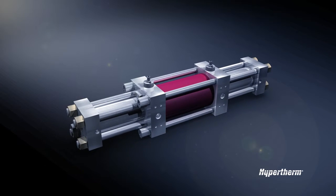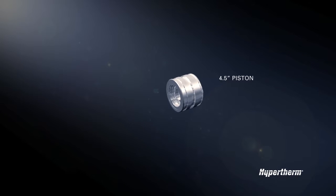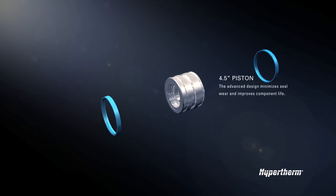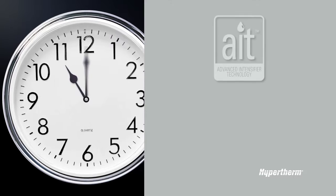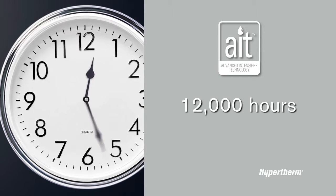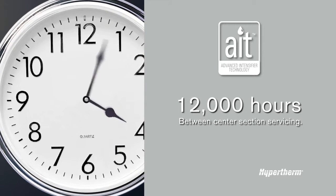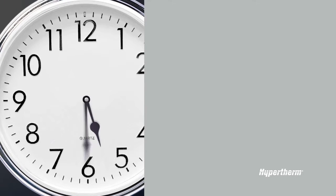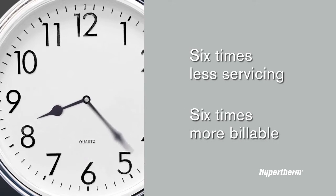The specific AIT differences begin with the innovative piston housed within the hydraulic center section. This advanced design minimizes seal wear and improves component life. With AIT, you'll get an average of 12,000 hours between center section servicing compared to 2,000 hours. The way Hypertherm WaterJet sees it, six times less servicing is six times more billable working time.